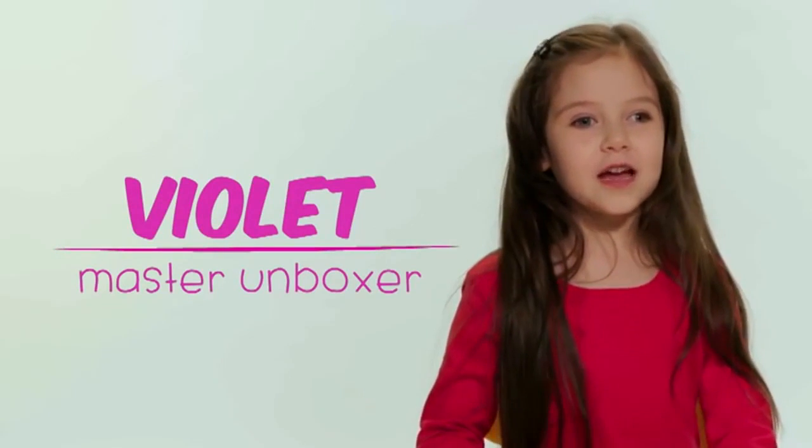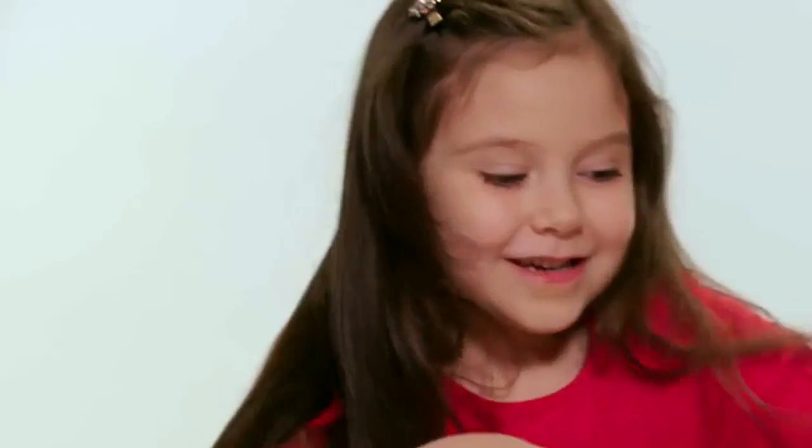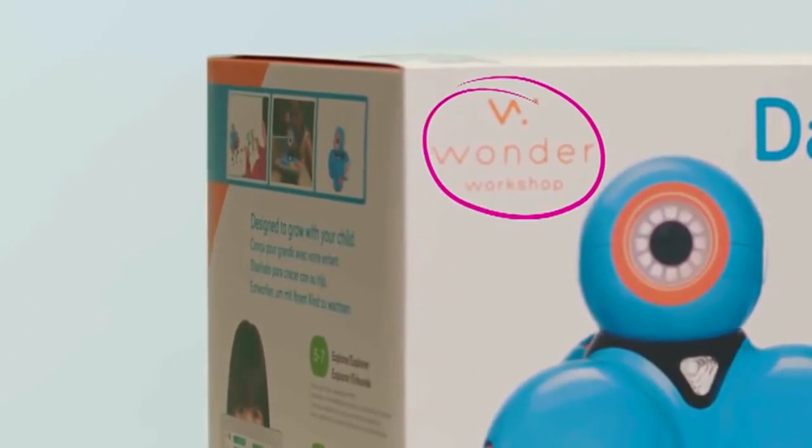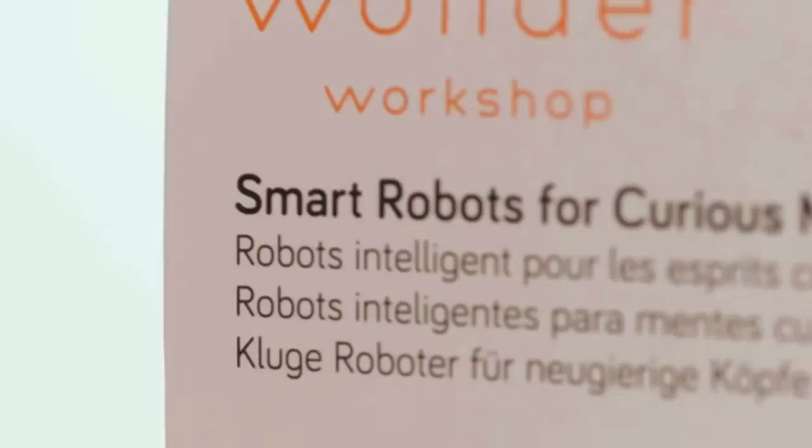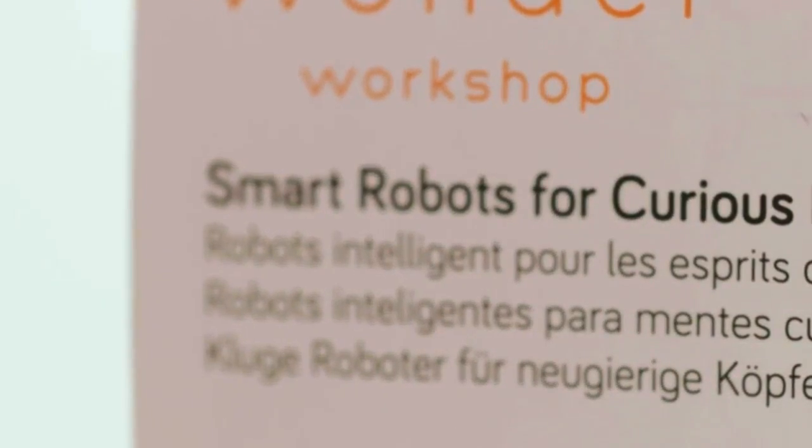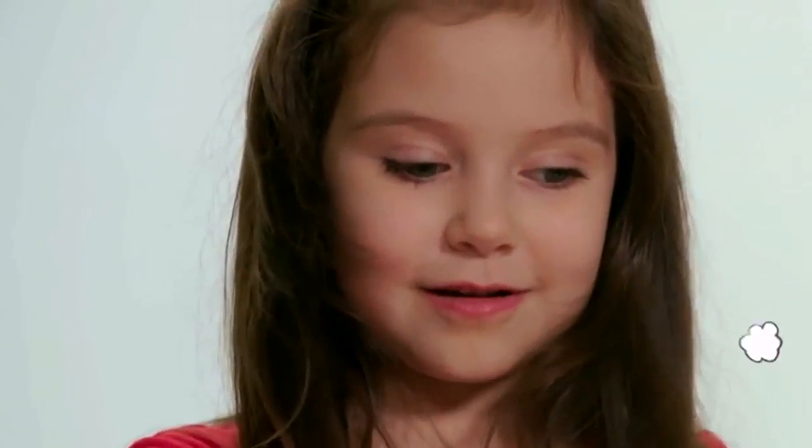Hi, it's Violet, and today we are unboxing a robot. Its name is Dash and it's by Wonder Workshop. It's for ages 6 and up, smart robots for curious minds. I don't even know what a curious mind is, but I think I have one.